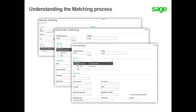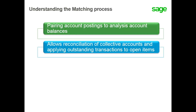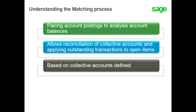This topic will help you understand the transaction matching process. The matching process as a whole consists of pairing account postings in order to analyze an account balance on a given date. Matching allows reconciliation of collective accounts and to apply outstanding or unapplied debits or credit transactions to open items. Matching is based on defined collective accounts.